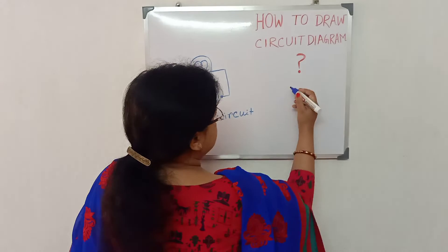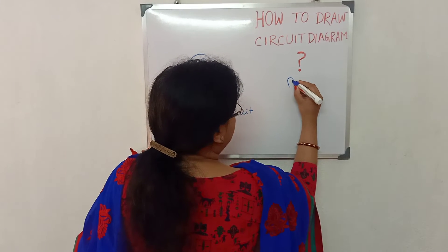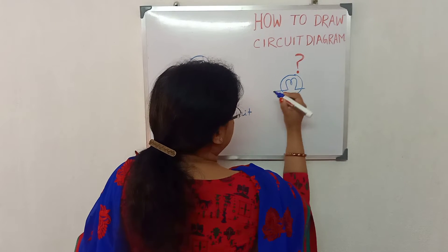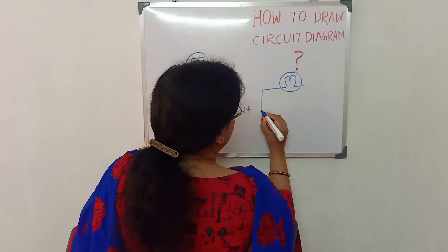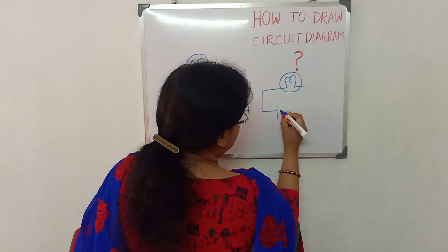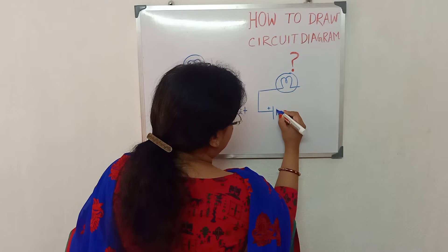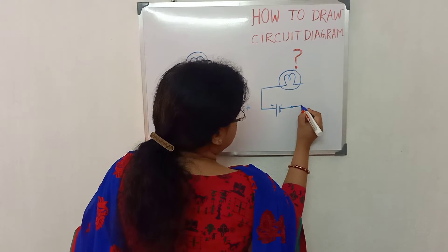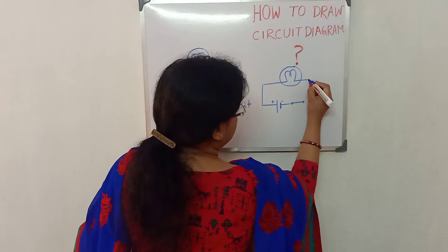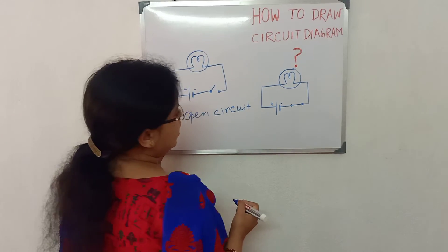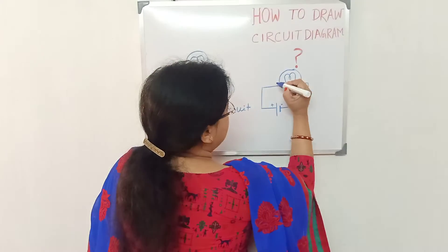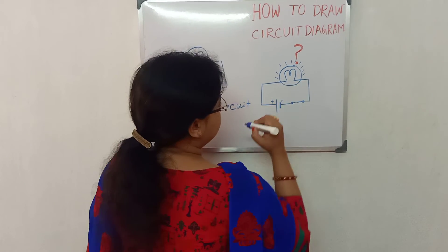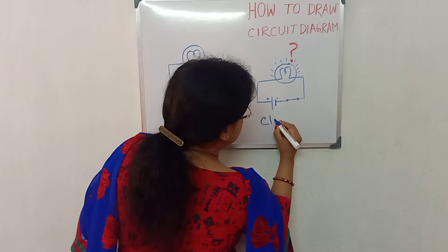Now, if we want to draw a closed circuit, again I am drawing the bulb. Now I will show the cell with the negative terminal. Now, on switch. And hence, the electric current is flowing through the circuit and the bulb is glowing. This is a closed circuit.